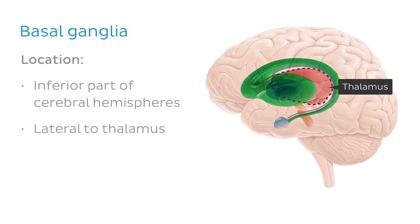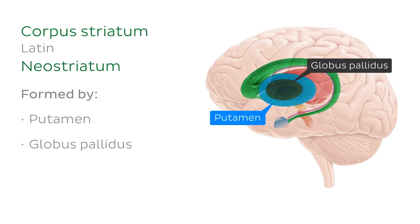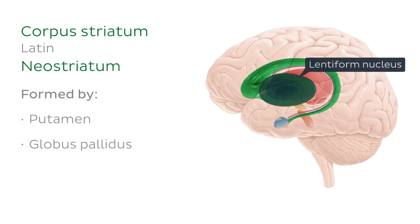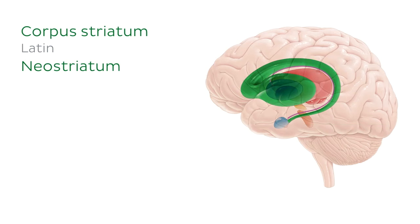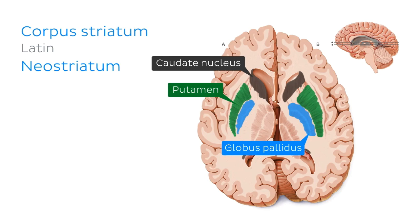Now onto the individual elements of the basal ganglia. First up, let's talk about the corpus striatum. The corpus striatum is a bilateral collection of three grey matter nuclei found in the inferior cerebral cortex. It is formed by the putamen and the globus pallidus, which together form the lentiform nucleus, and the caudate nucleus. The corpus striatum literally translates to 'stripy body,' and if you look at a horizontal section through the brain, you can see why — all three nuclei have a striated appearance due to strands of grey matter passing through the internal capsule from the caudate nucleus to the putamen.